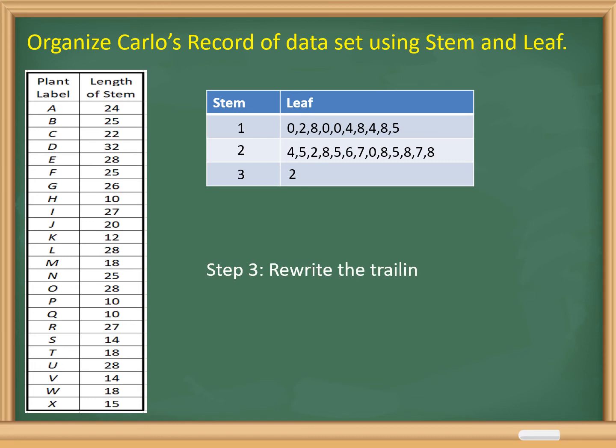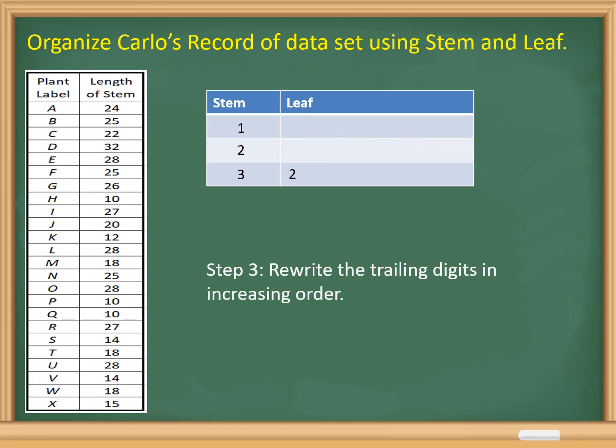Step 3: write the trailing digits in increasing order. That will be the final organized stem and leaf display.